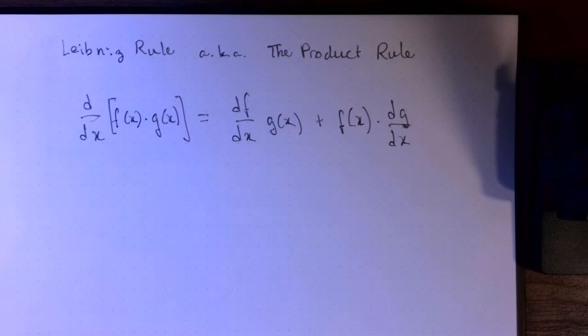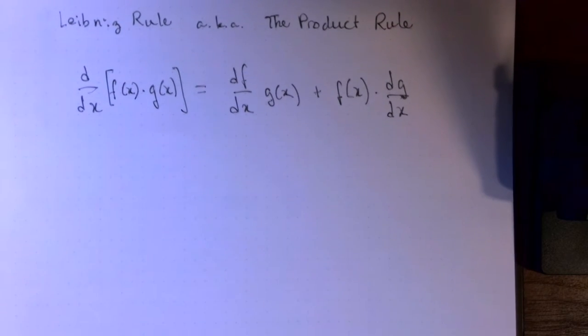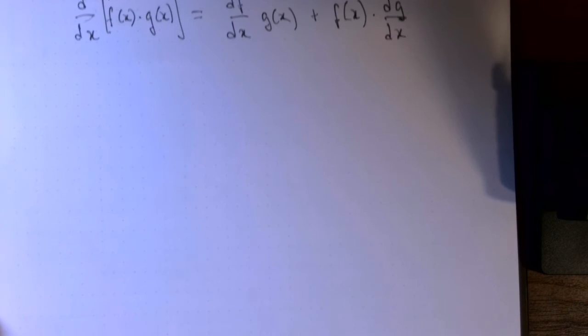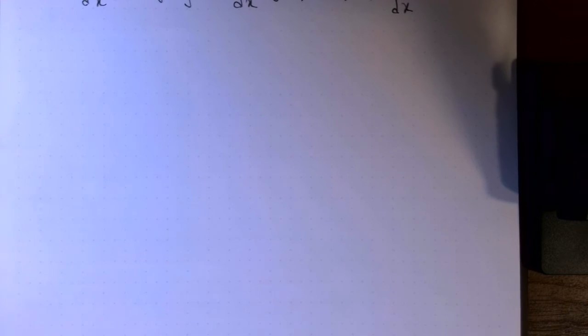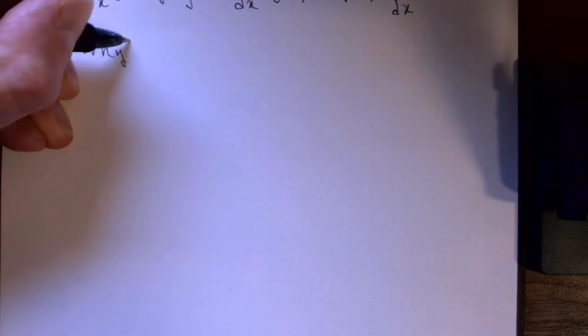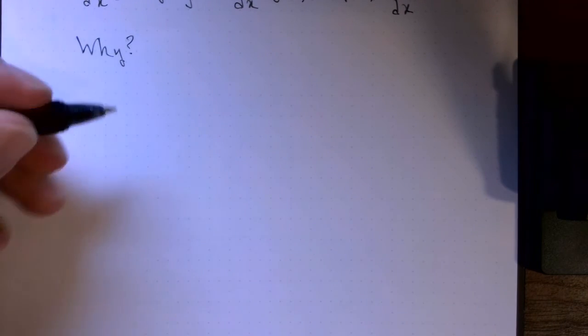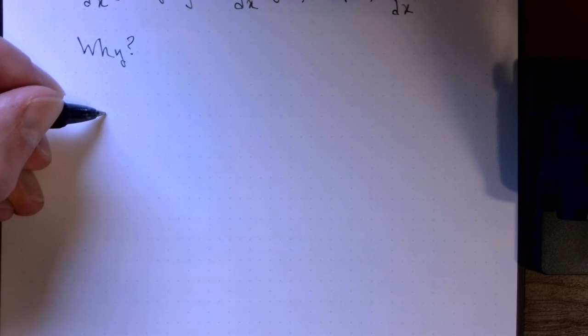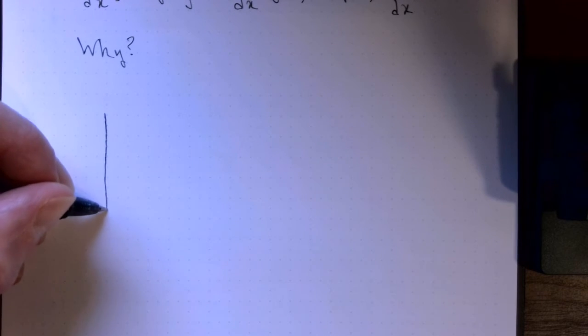So it would be nice if the derivative of a product was the product of derivatives. Unfortunately, it just doesn't work like that. And every student of mathematics should understand why that's the case. So let's look at that right here. Why is that? Why does that work that way and not in the simple way?